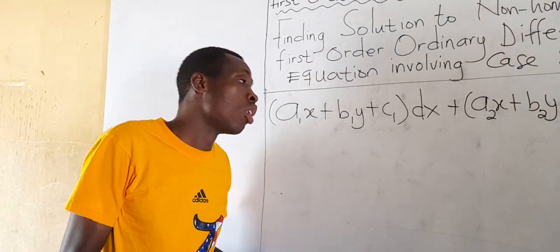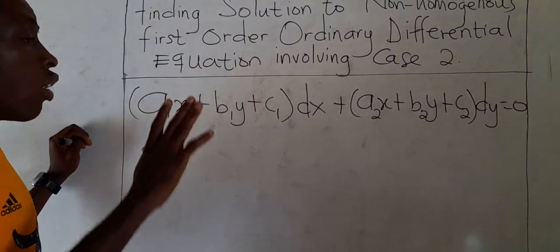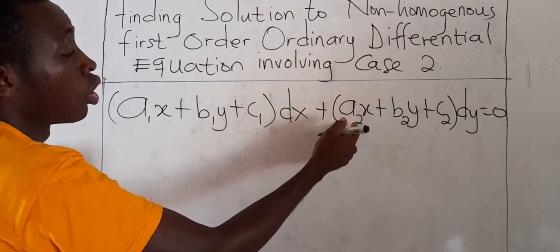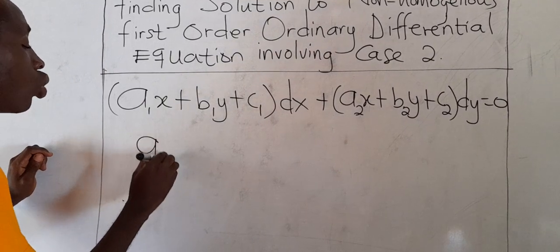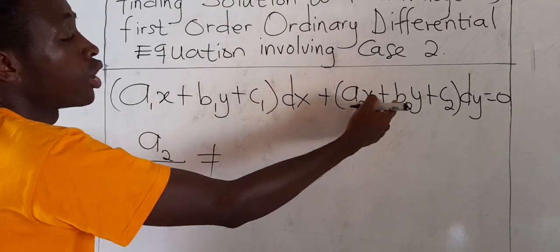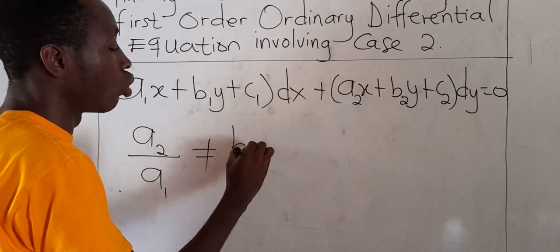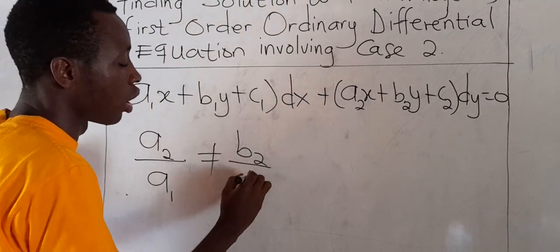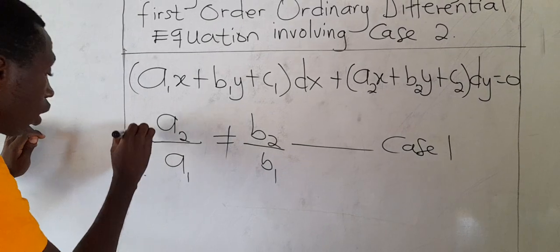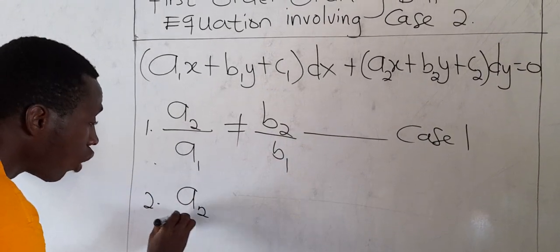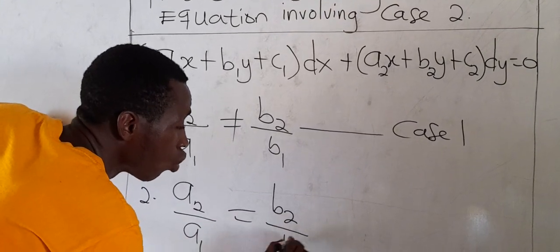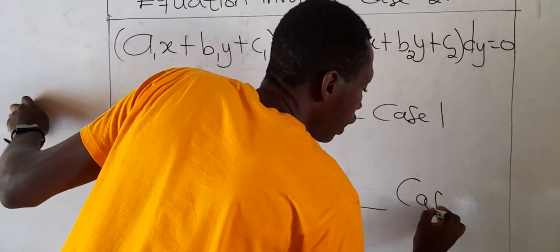Non-homogeneous first-order ordinary differential equations take a specific form. We said that if the coefficient of the x-term, a2, divided by the coefficient of the x-term, a1, is not equal to the coefficient of the y-term, b2, divided by b1, then we call this case 1. If a2 over a1 equals b2 over b1, then we say it is case 2.